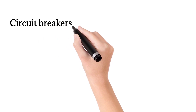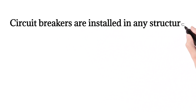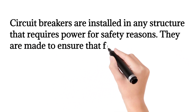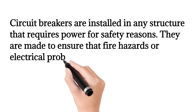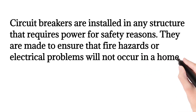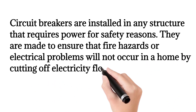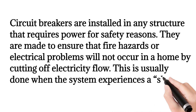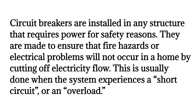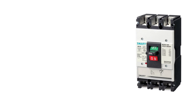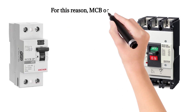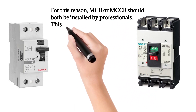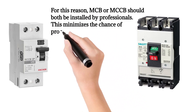Circuit breakers are installed in any structure that requires power for safety reasons. They are made to ensure that fire hazards or electrical problems will not occur in a home by cutting off electricity flow. This is usually done when the system experiences a short circuit or an overload. For this reason, MCB or MCCB should both be installed by professionals. This minimizes the chance of problems occurring with use.